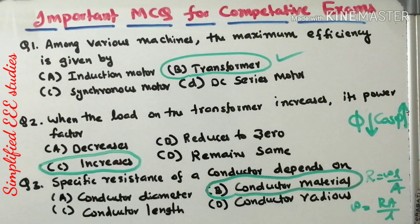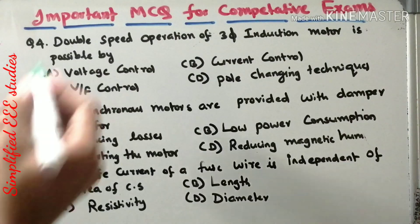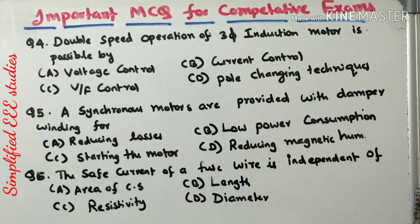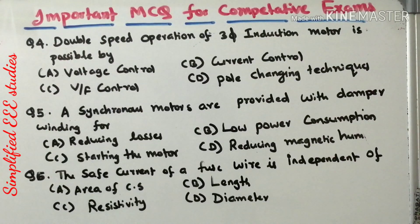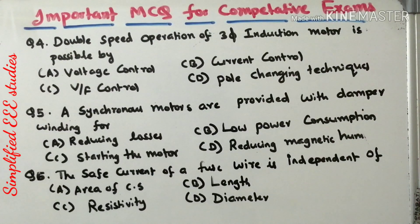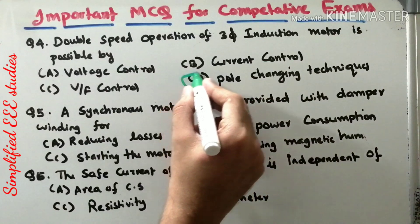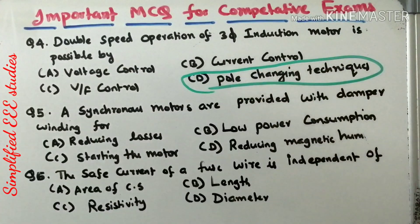You can expect one more question: what is the unit of specific resistance? The unit of specific resistance is ohm-meter. Moving on to question 4: double speed operation of a three-phase induction motor is possible by — voltage control, current control, V/F control, or pole changing method. Double speed operation is mainly used for variable speed applications. You change the poles repeatedly, changing the speed — that is known as double speed operation. The best answer is the pole changing method.